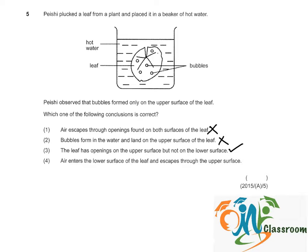Option four, air enters the lower surface of the leaf and escapes through the upper surface. We cannot observe that air enters the lower surface of the leaf, so this conclusion is incorrect. The answer is three.